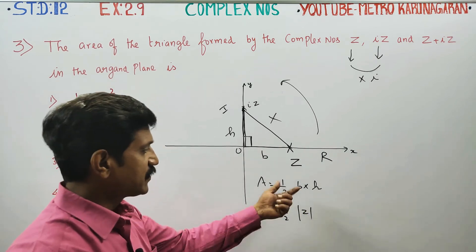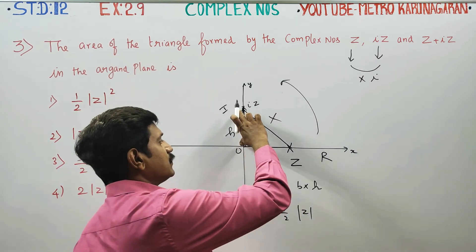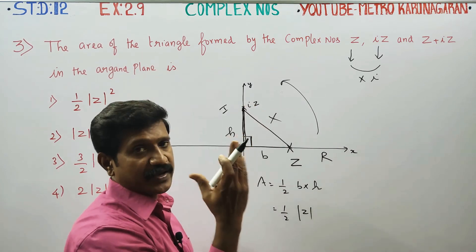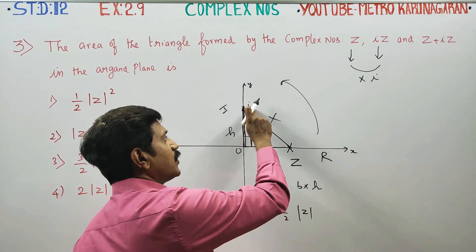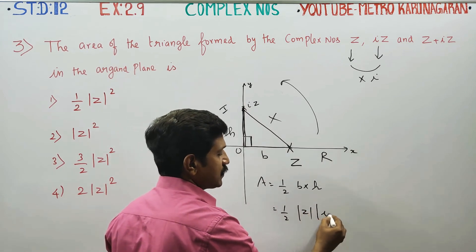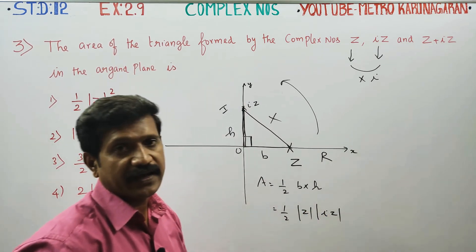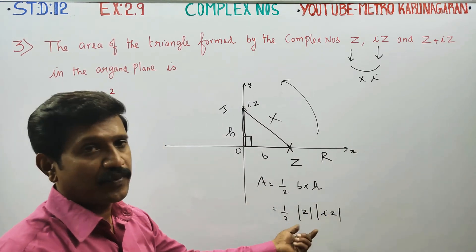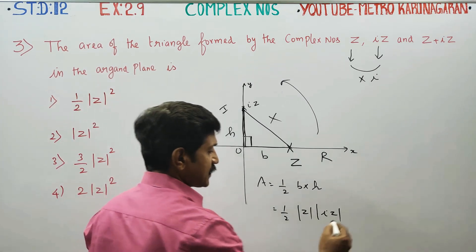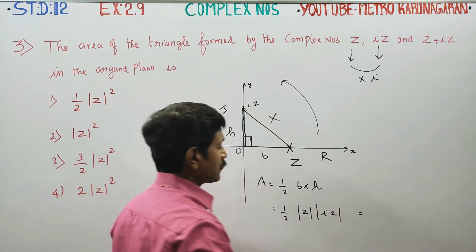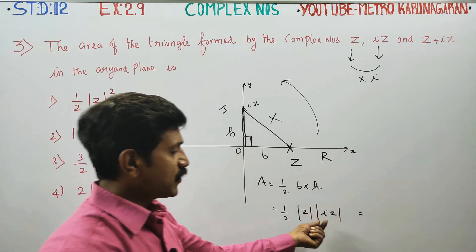Modulus of Z is answer. The height is origin. We have difference. Direct modulus of IZ. Modulus of IZ. This is formula. Is equal to modulus of IZ.